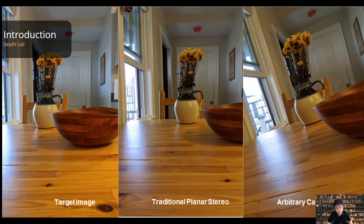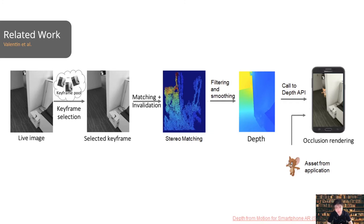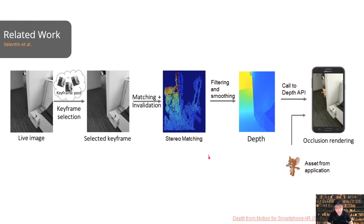Users are likely to move very little or want to move arbitrarily. So important considerations include which keyframe to choose and how to maximize information from each frame. Keyframes are chosen from a pool to give the best possible depth for the current frame — oftentimes just a few centimeters away. We then use a stereo matching algorithm, providing a sparse and noisy depth representation that needs to be filtered, interpreted, and smoothed. We call it raw depth in the ARCore API.